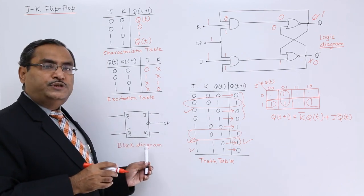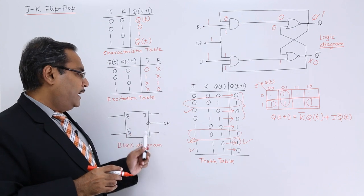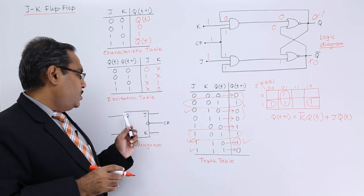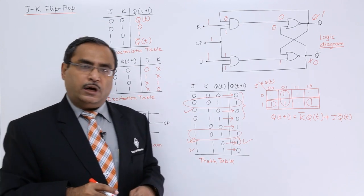This is the block diagram of JK Flip-Flop. Here we are having J and K and clock pulse as input and Q and Q bar will be the output.